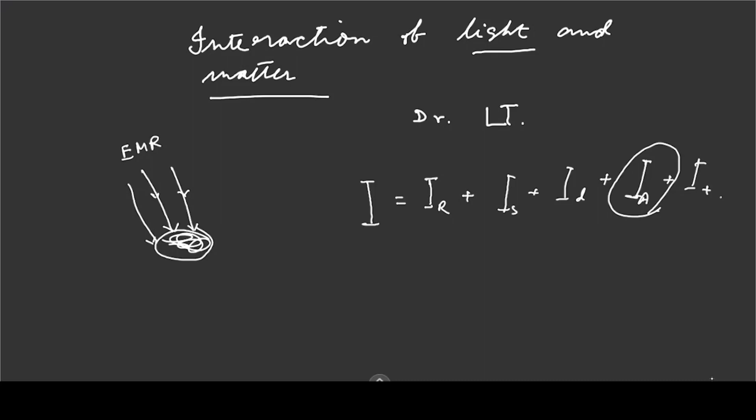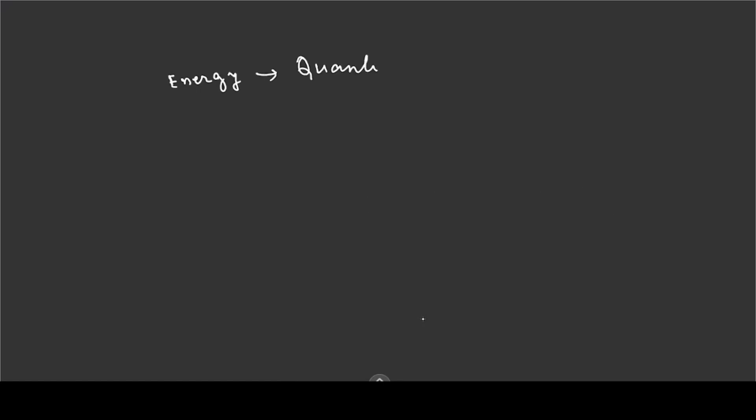This molecule will be quantized. Quantized means that only particular energies are allowed. The vibrational level is quantized, the rotational level is quantized, and similarly the electronic energy level is quantized — electronic, vibrational, rotational.